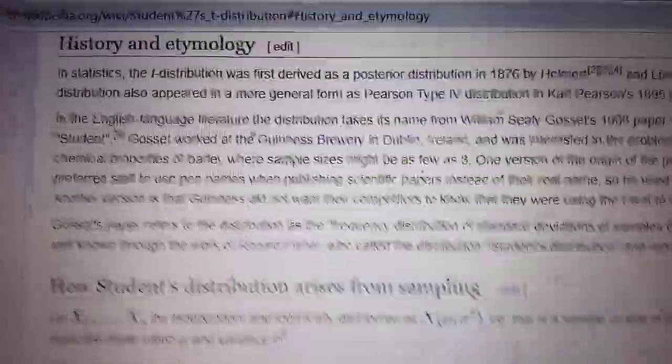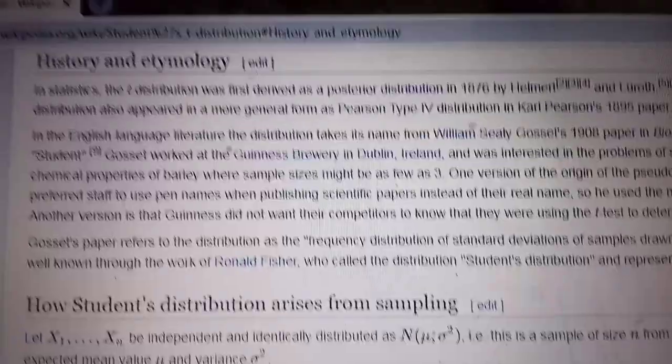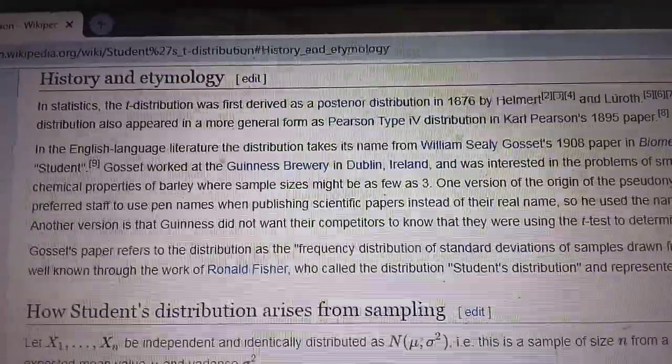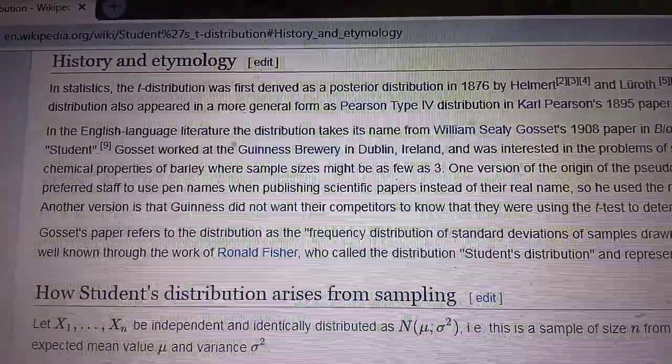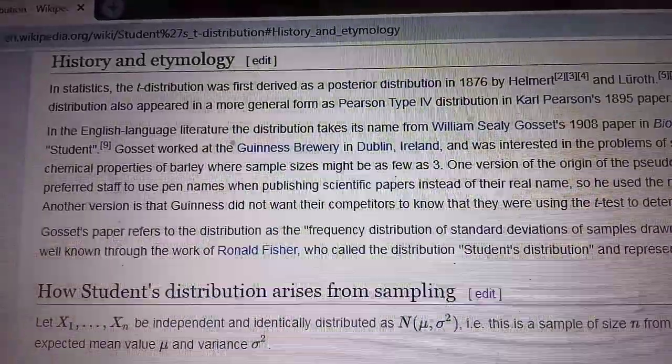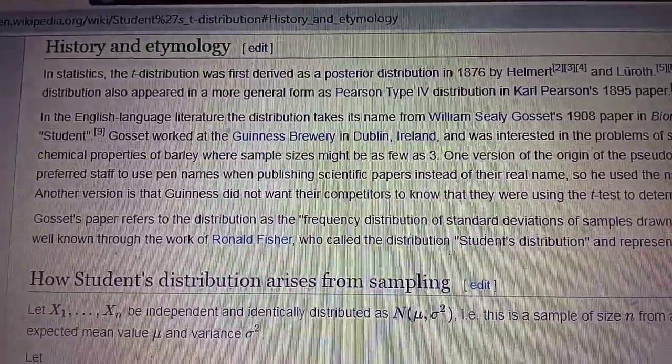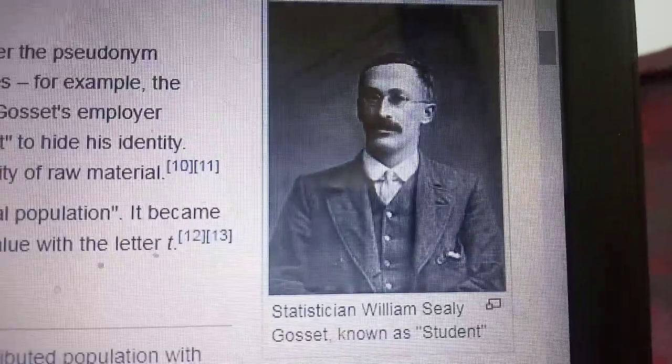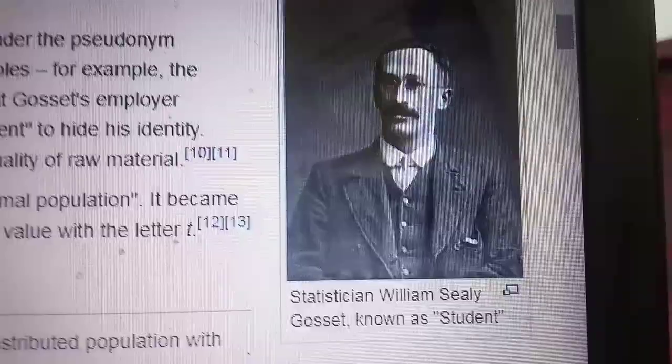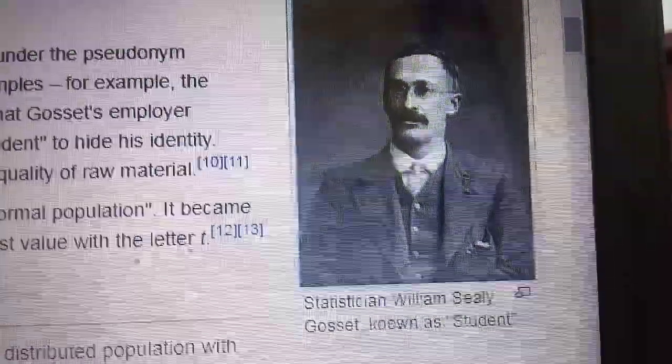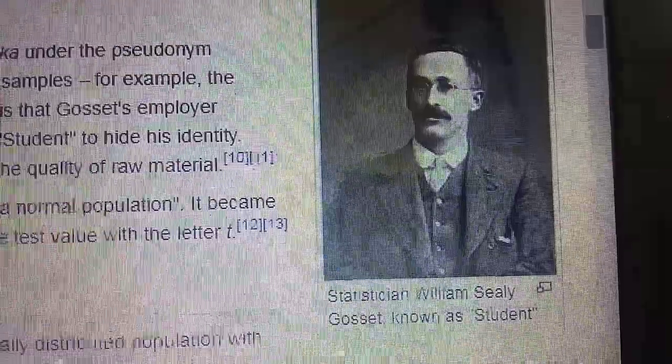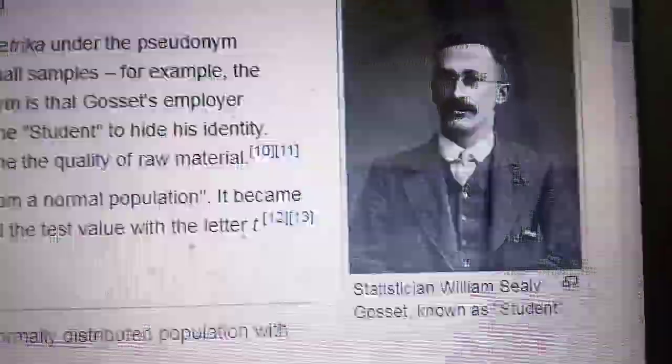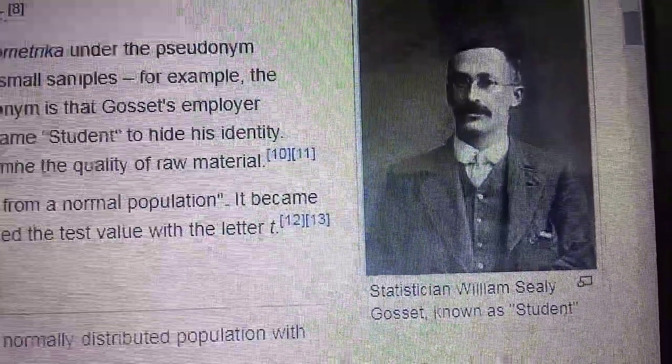Here you can see the history. I will talk through this history a bit. In English language literature, the distribution, that is the Student's t-distribution, derives its name from William Sealy Gosset. This is the picture of William Sealy Gosset. He used to use the pseudonym 'Student'.